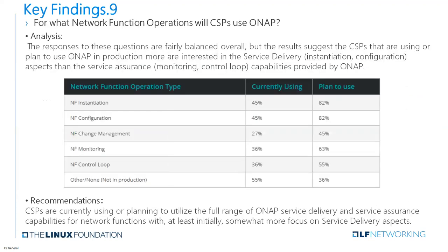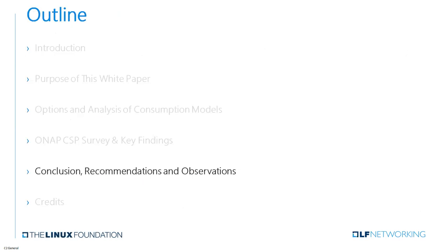We'd also like to figure out what network function operations CSPs will use ONAP for. The responses to this question are fairly balanced overall, but the result suggests that CSPs using or planning to use ONAP in production are more interested in the service delivery aspects than the service assurance capability. We think that CSPs are currently using or planning to utilize the full range of ONAP service delivery and service assurance capabilities for network functions, with at least initially somewhat more focus on service delivery aspects. Javier will now bring you some conclusions and recommendations based on the survey.